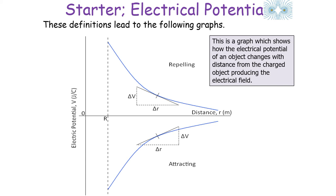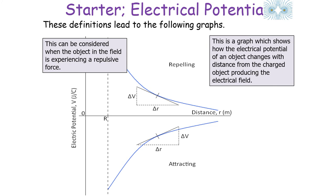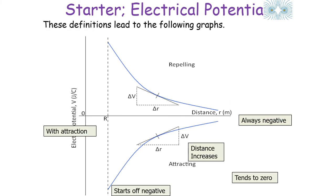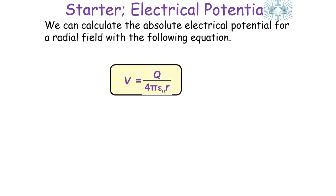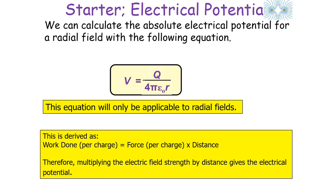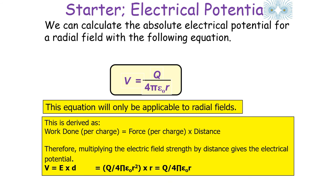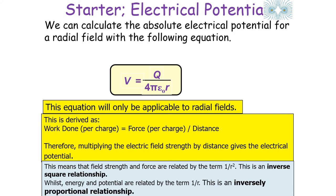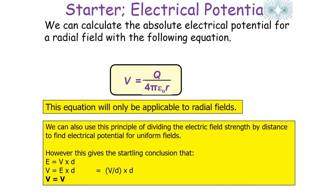These graphs show how electrical potential changes with distance from the charge producing the field — one for repulsive force and one for attractive force. The equation for absolute electrical potential in a radial field is V = Q / (4πε₀ R). Electrical potential and energy are related by 1/R, whilst field strength and force are related by 1/R². This is because multiplying electrical field strength by distance gives electrical potential — field strength and force follow an inverse square relationship whilst energy and potential follow an inversely proportional relationship.